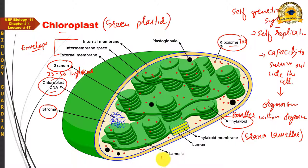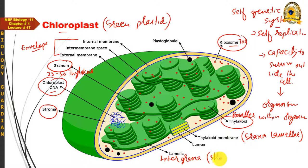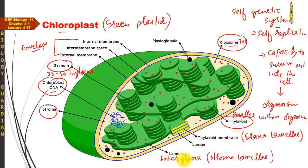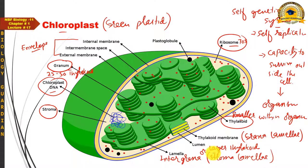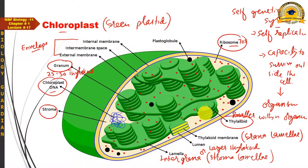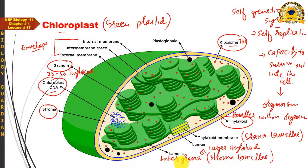Connecting adjacent grana there is another membrane called intergrana or stroma lamella. These intergrana or stroma lamellae are sometimes called larger thylakoids, while the thylakoids within a granum are the smaller thylakoids. So 'smaller thylakoids' refers to grana thylakoids and 'larger thylakoids' or stroma lamellae refers to intergrana.